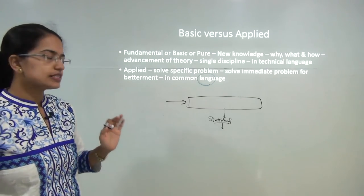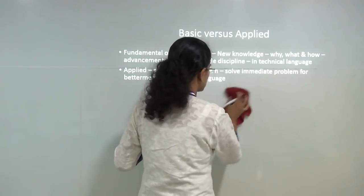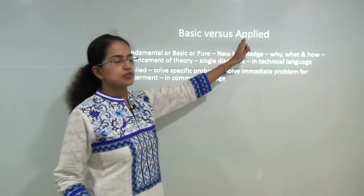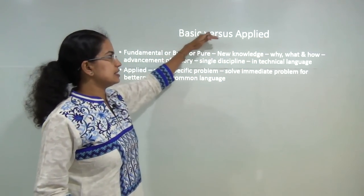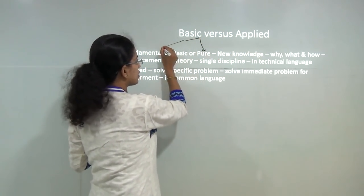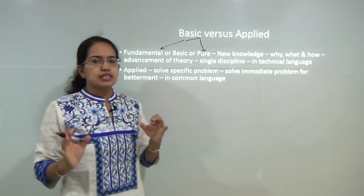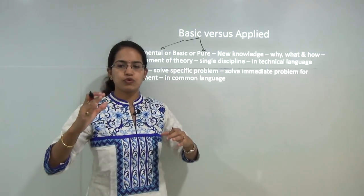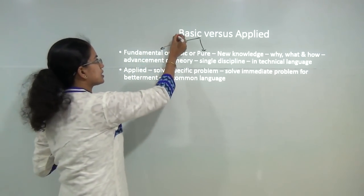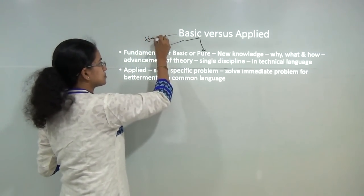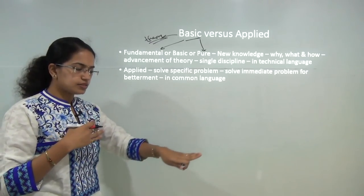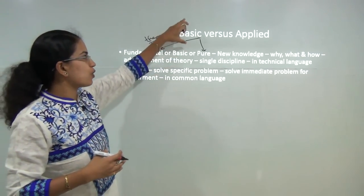We are classifying research methods under 14 major heads. The first is basic research versus applied research. Basic research is also known as pure research or fundamental research. It tries to move forward to understand new knowledge — what is important is you are trying to formulate a new theory. So it is an advancement of existing theory or a step toward formulating a new theory.